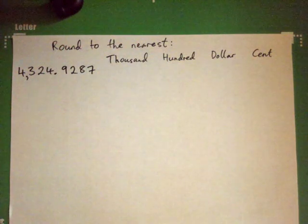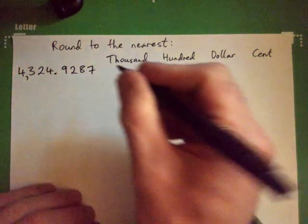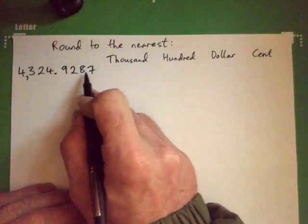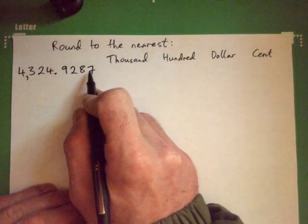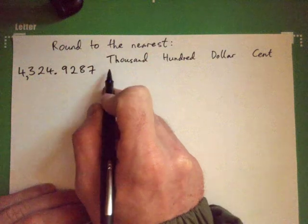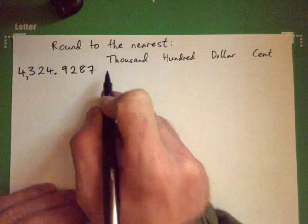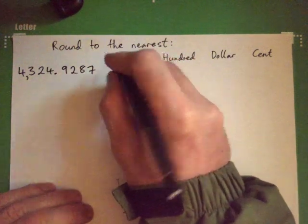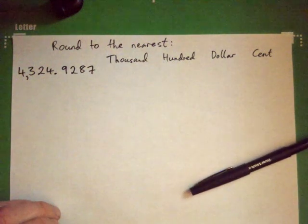So rounding $4,324.9287 to the nearest thousand dollars — you just look at what comes after the thousands place.